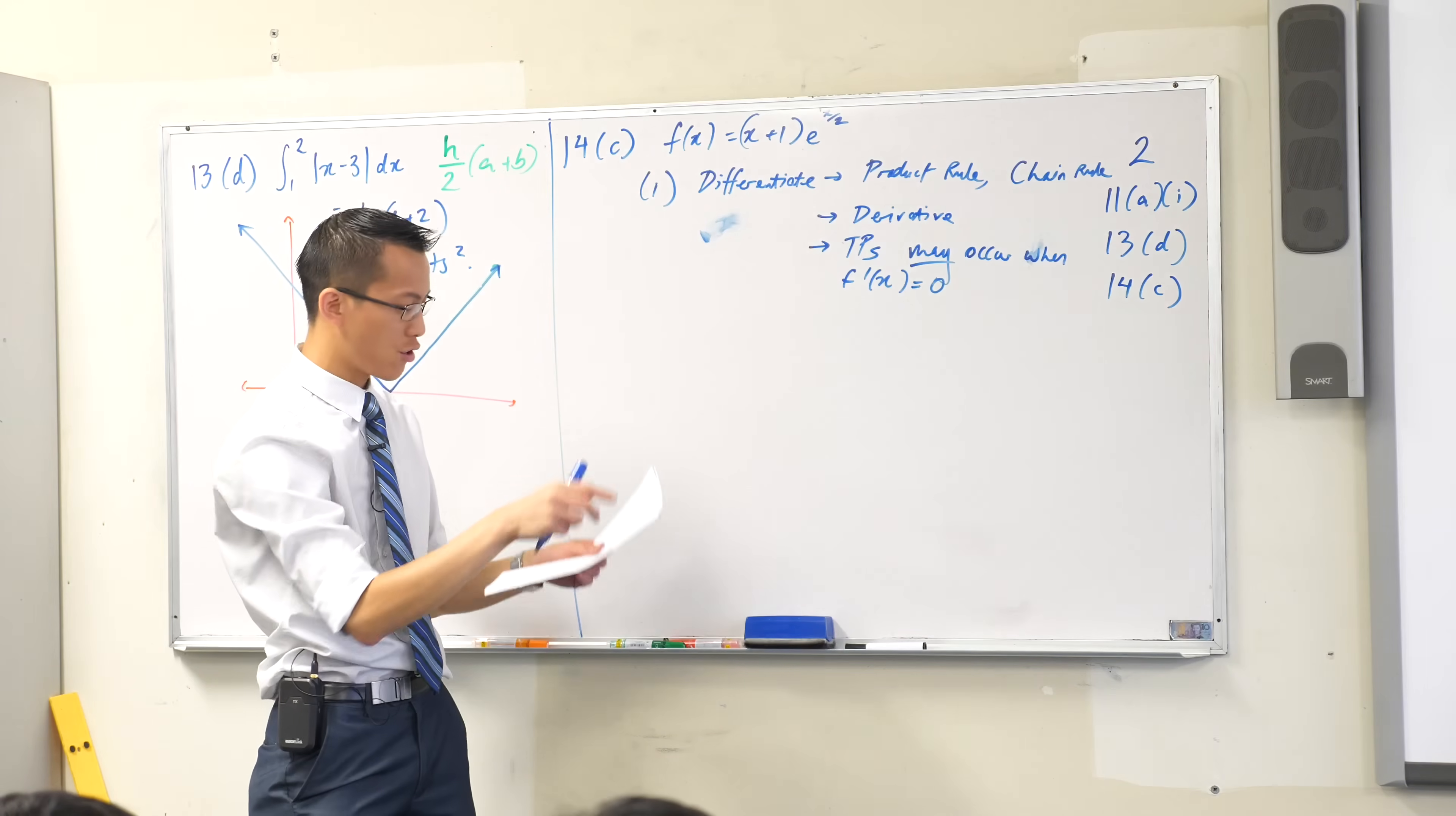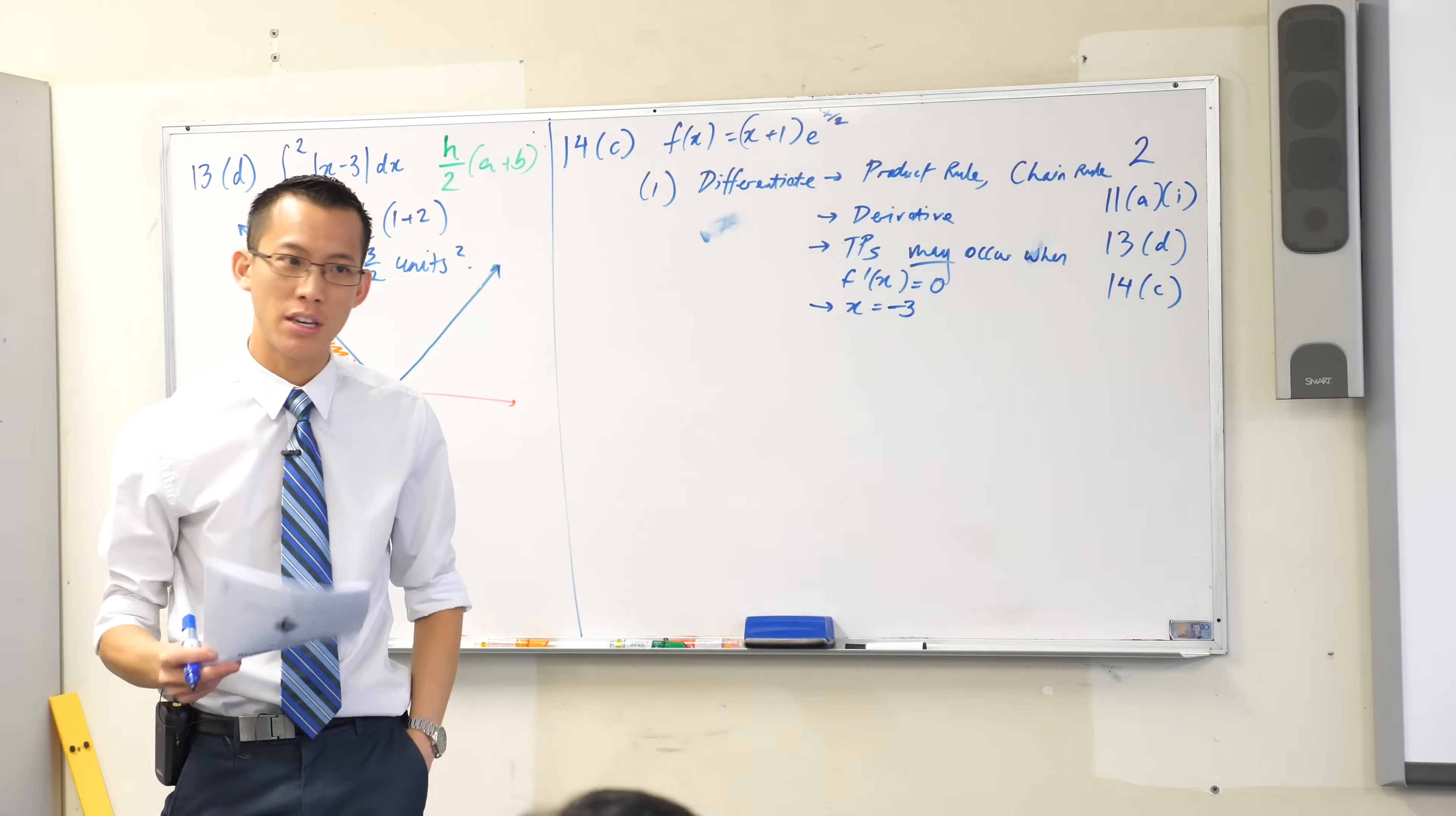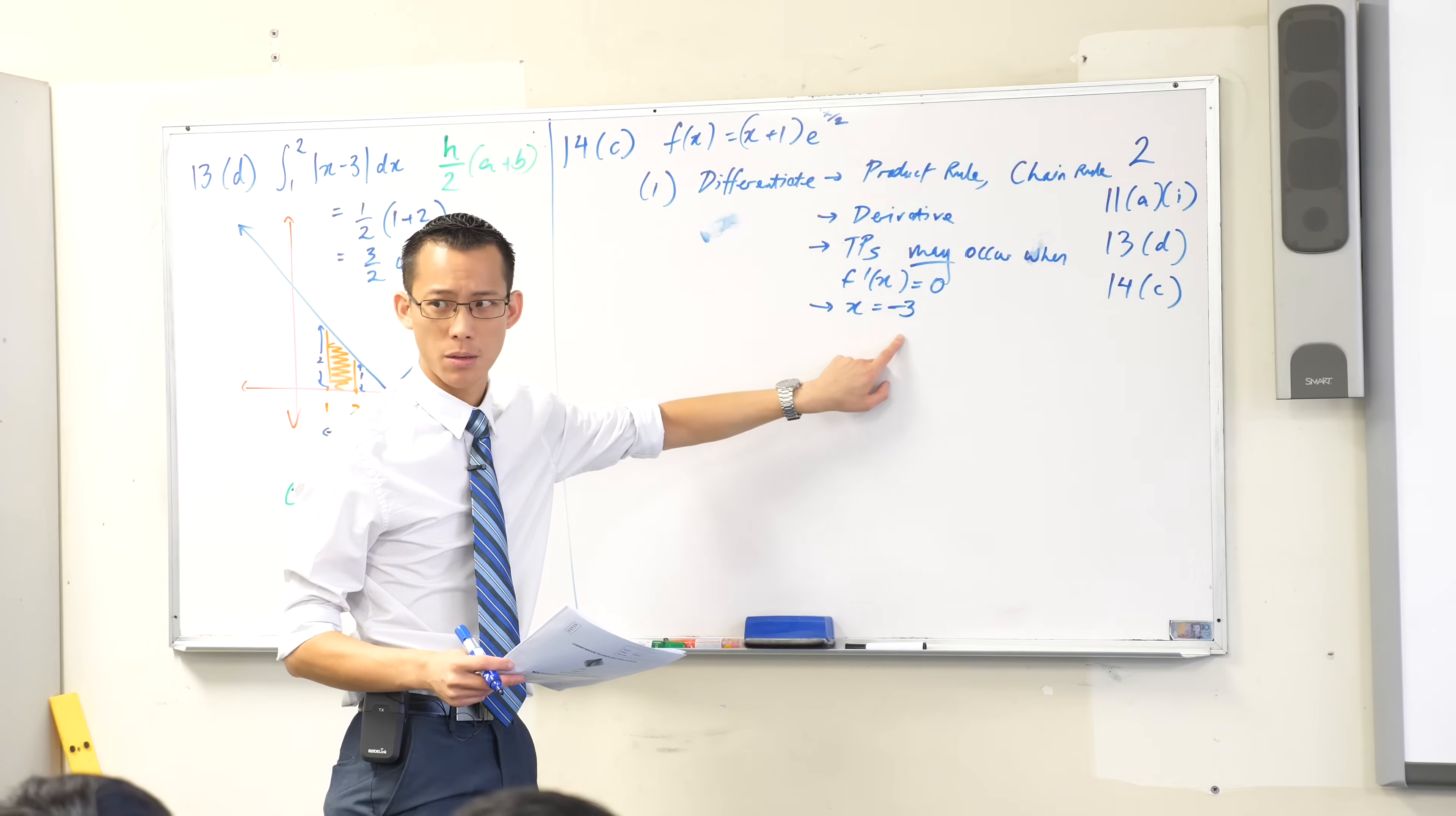You're going to solve for that. You're going to get an x value out, namely this. Are you done at that point? Are you finished? To get the two marks, would you give two marks to an answer that stops there? You wouldn't, right? What's it missing? It's missing a couple things.